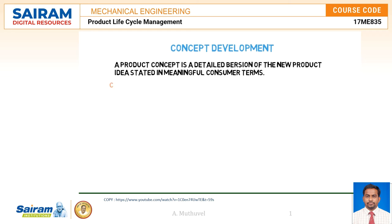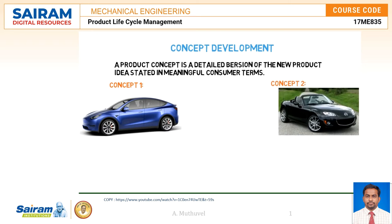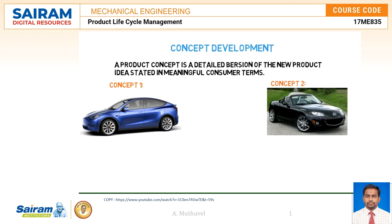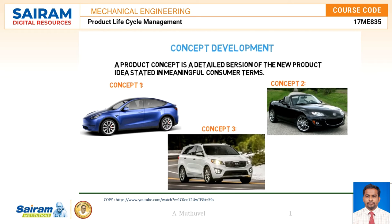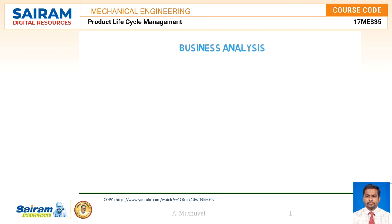For example, a car company thinking about developing a new car can create the following product concepts: Concept one — an affordably priced mid-sized car designed as a second family car for use around town. Concept two — a mid-price sporty compact car appealing to young singles and couples. Concept three — a high-end mid-sized utility vehicle appealing to those who like the space of SUVs but also want an economical car.